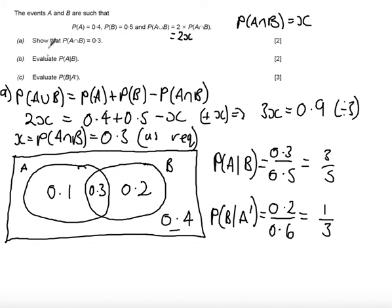Okay, so let's have a look to see how the marks are awarded in this question. In this question, initially we are given a method mark for substituting in and trying to use the relationship between probability of A union B and A intersect B. And then finally we get an answer mark for a convincing argument that gets us to probability of A intersect B equals 0.3 as required.